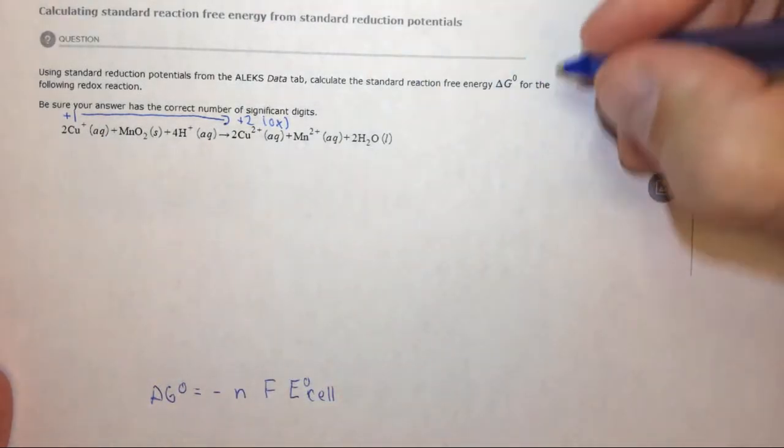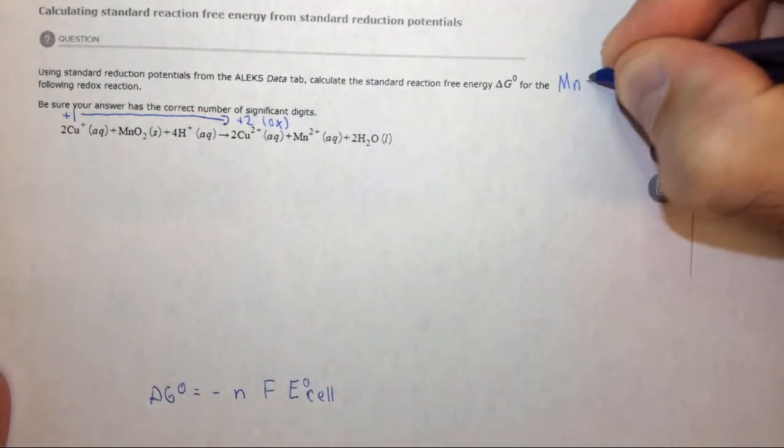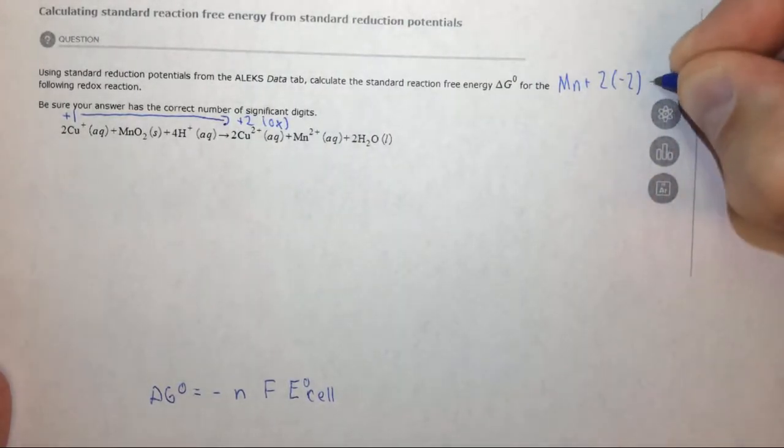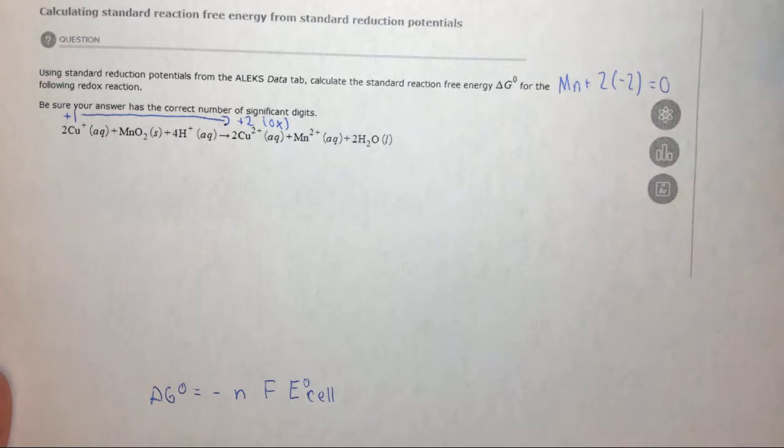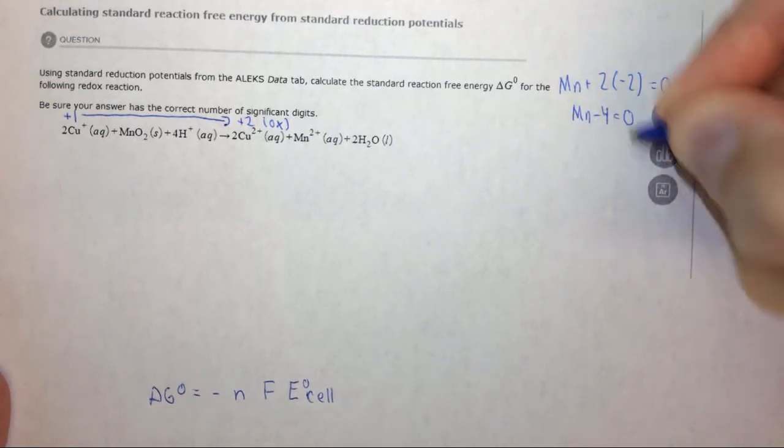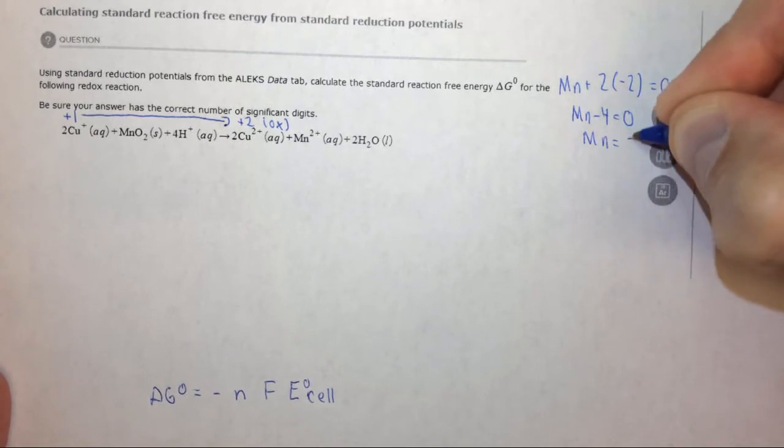Let's look at manganese. We have Mn plus, we have two oxygens, each with an oxidation state of minus 2 equals the overall charge which is 0. So Mn minus 4 equals 0, Mn equals plus 4.